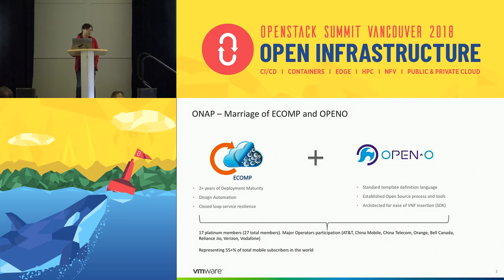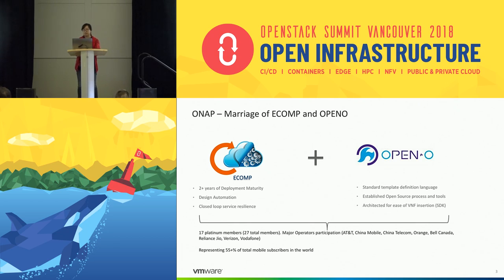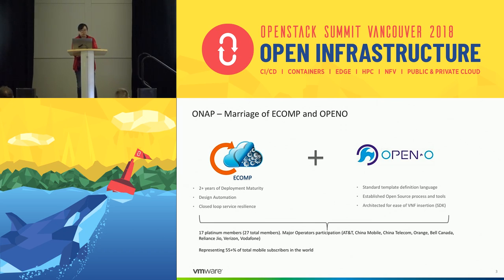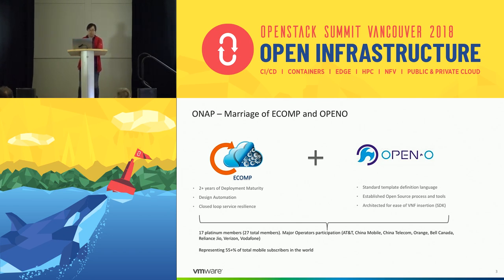ONAP is a huge community today under the Linux Network Foundation. It comes from the merger of ECOMP and OpenO. ECOMP comes from AT&T, already deployed at AT&T for at least two years, and is good at design automation and closed-loop resilience. OpenO is another open community driven by China Mobile, good at standard template-driven automation and virtual function onboarding. We already have more than 17 platinum members, including AT&T, China Mobile, Verizon, and Vodafone.